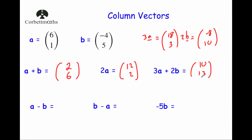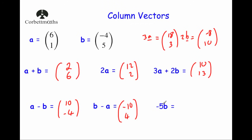Now subtractions. It's important to note which vector you start with, as a − b gives a different answer to b − a. With a = (6, 1) and b = (-4, 5): a − b = (6 − (−4), 1 − 5) = (10, −4). Then b − a = (−4 − 6, 5 − 1) = (−10, 4). Finally, −5b: multiply b = (-4, 5) by −5, giving (−4 × −5, 5 × −5) = (20, −25).